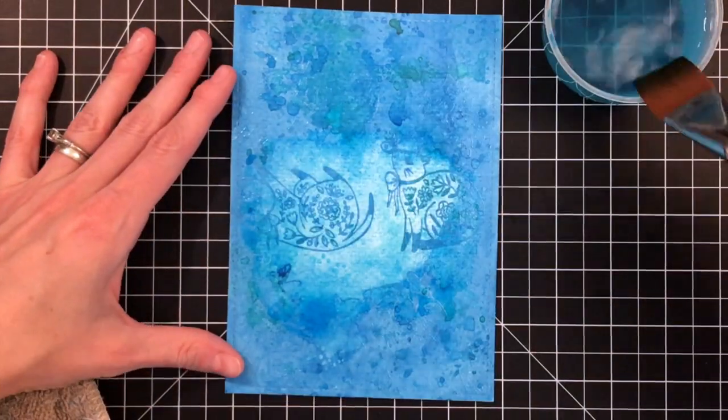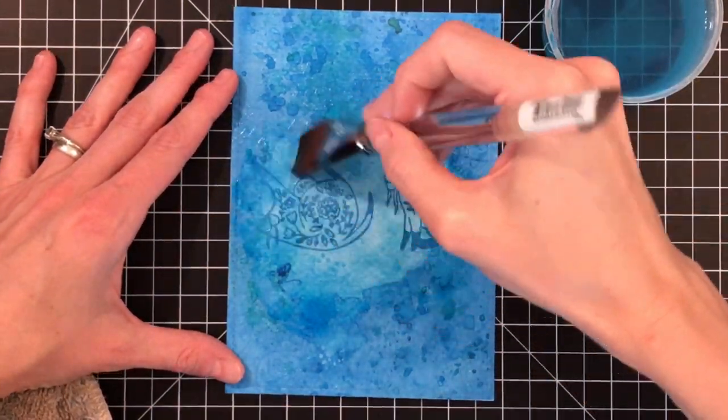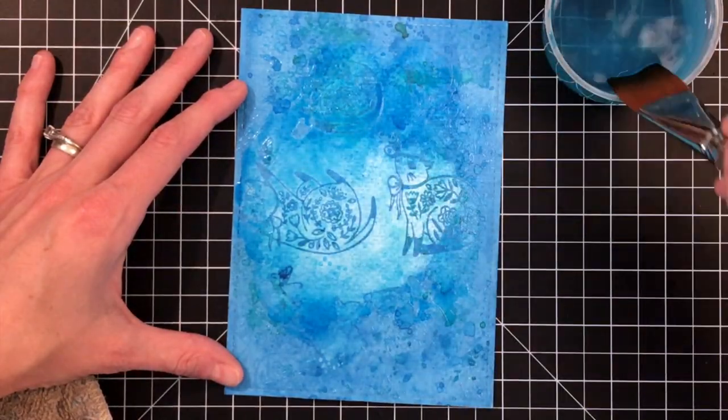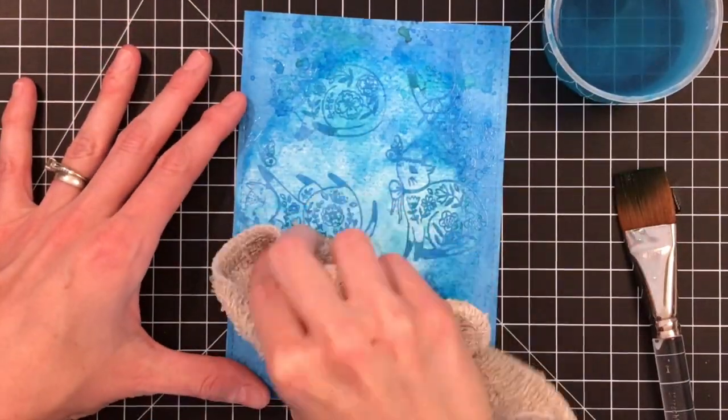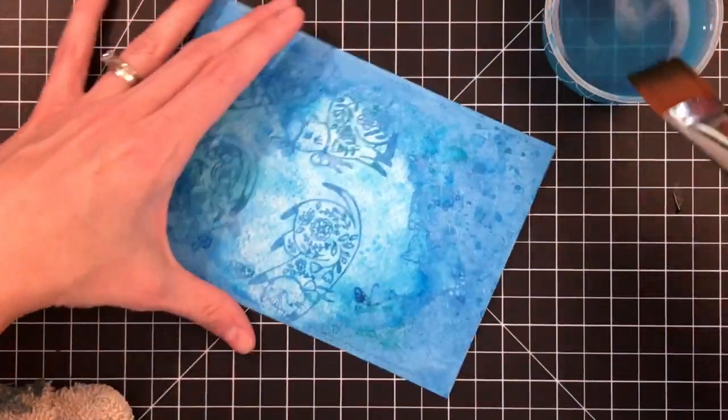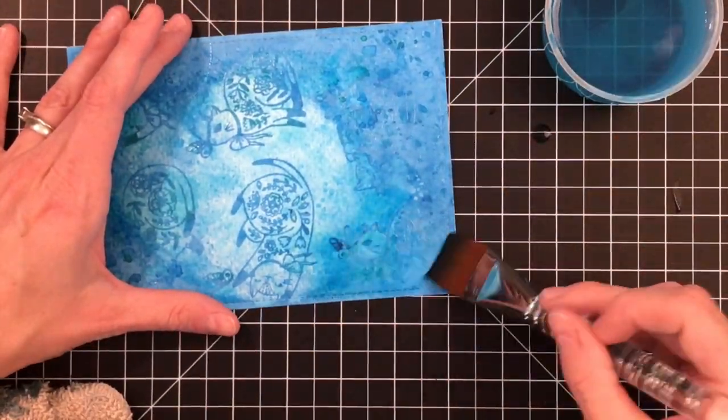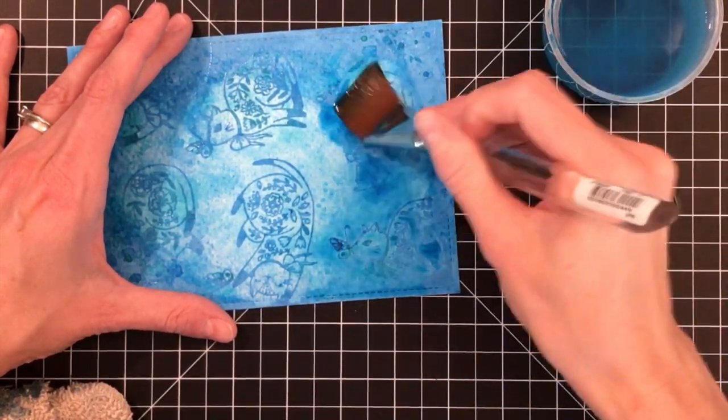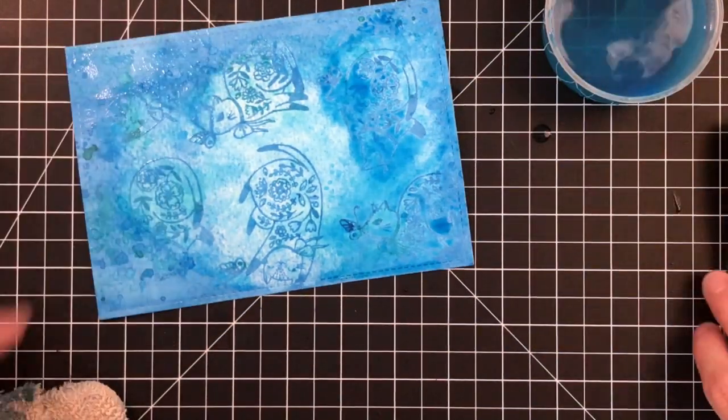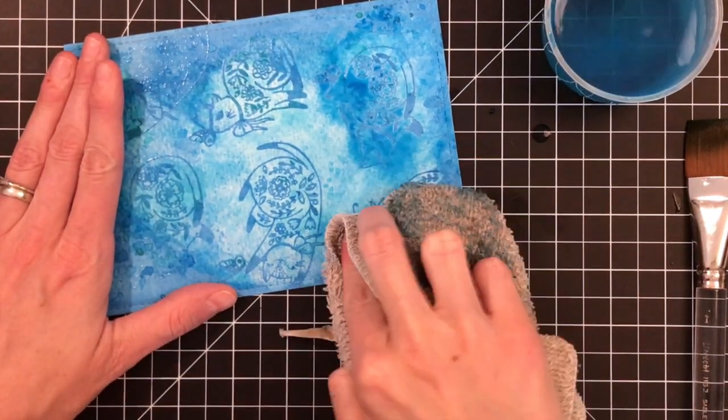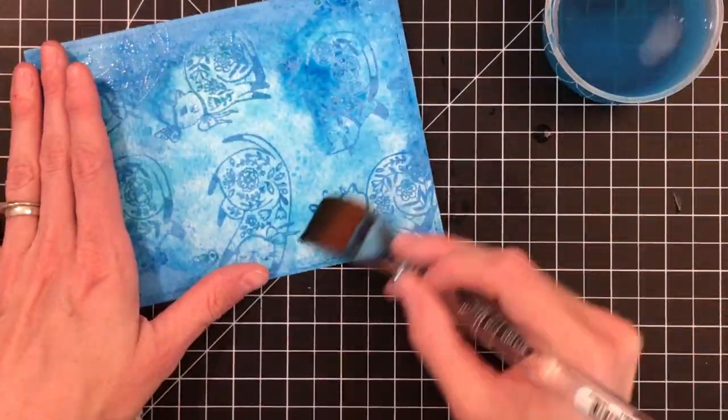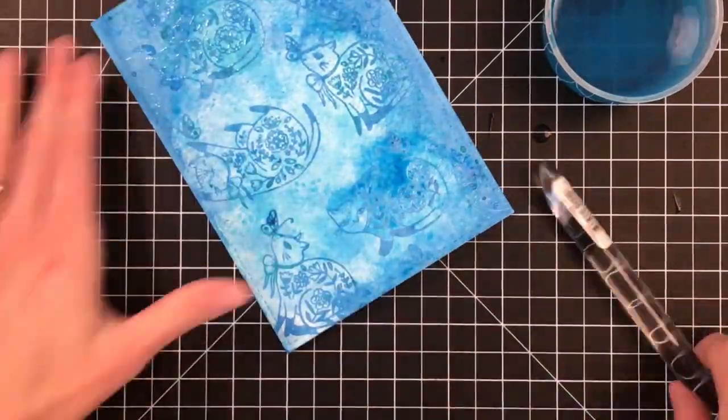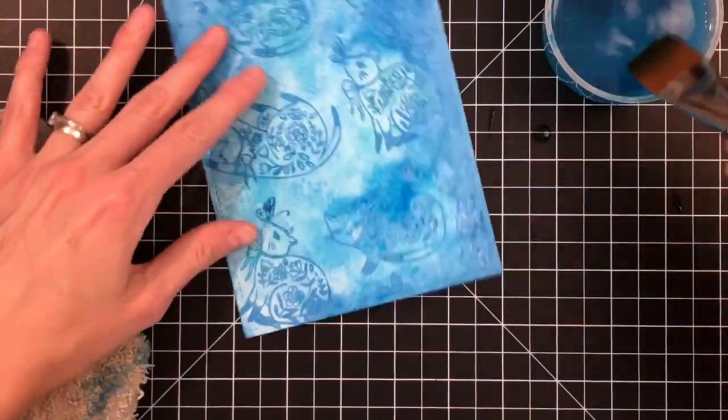But to pick it up even more, I'm using a towel, but you can definitely use a paper towel. And I'm going to continue to work my way around my panel, picking up the ink. And you can see it's like magic. All of a sudden all these kitties and butterflies are becoming more visible or being revealed because we trapped the paint and the distress ink with the clear embossing. So I'm going to go around here and continue to pick up that blue ink and watercolor.